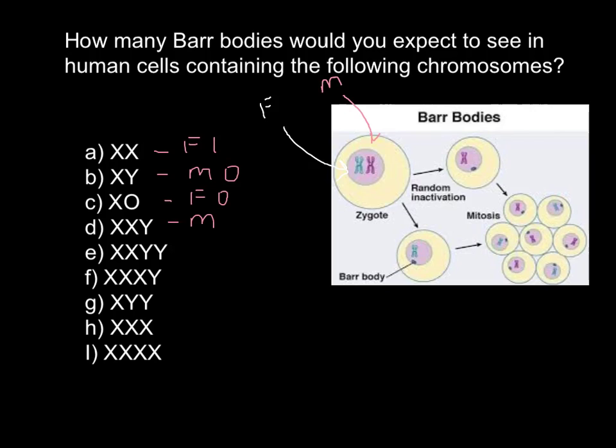E is a variant of the Klinefelter syndrome. Phenotypically this is going to be male, and such disorder happens in one in 17,000 births.